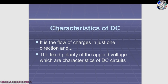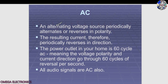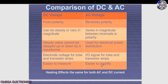Characteristics of DC current: it flows in only one direction because its polarity cannot be changed, and it has a fixed polarity of the applied voltage. Alternating current (AC) has a voltage source that periodically alternates or reverses in polarity, so the resulting current periodically reverses direction. The power outlet in your home is 60-cycle AC, meaning the voltage polarity and current direction go through 60 cycles of reversal per second.